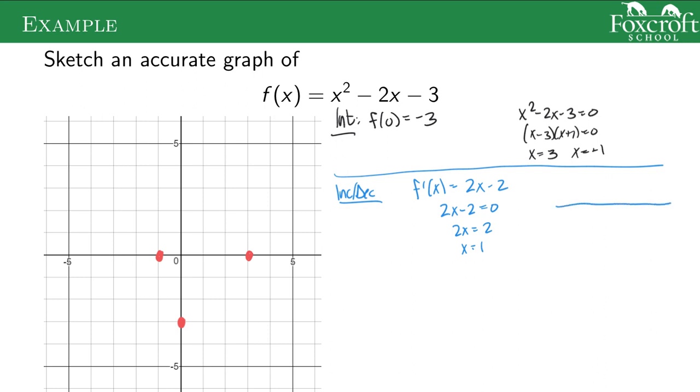If I put that on a number line, some test points. I'm plugging my test points into my first derivative. So I plug in 0, I get negative 2, so everything's negative. If I plug in 2, I get positive 2, so everything's positive. So my function is going to be decreasing to the left and increasing to the right.